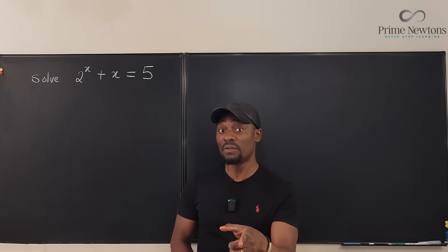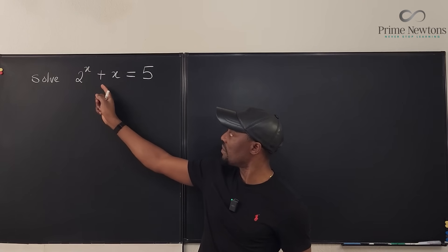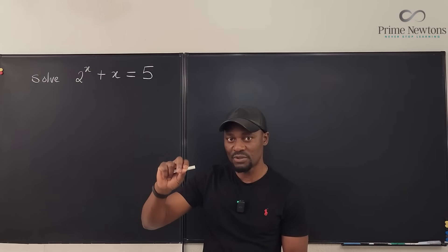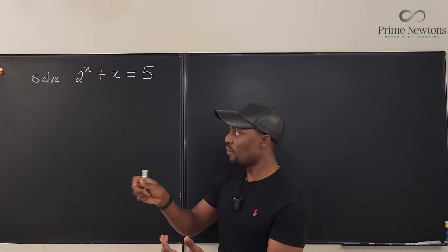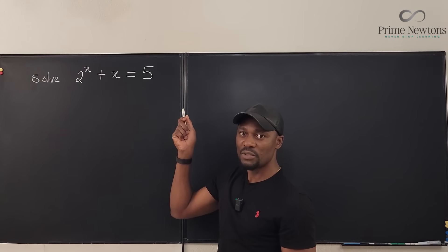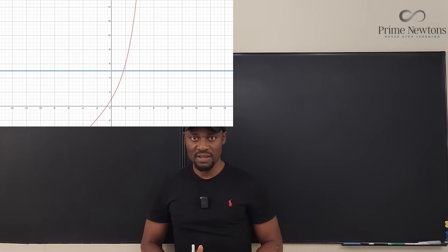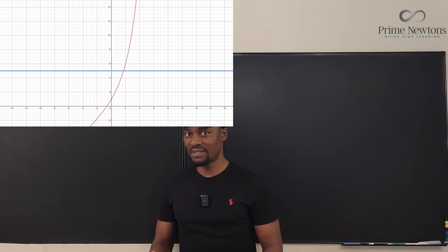Oh, you can solve it if you can sketch the graph of 2^x plus x. Just pick certain values of x and plot a graph, then find where the line y equals 5 crosses it. You can easily pick up the answer approximately, or you can just use Desmos or your calculator.